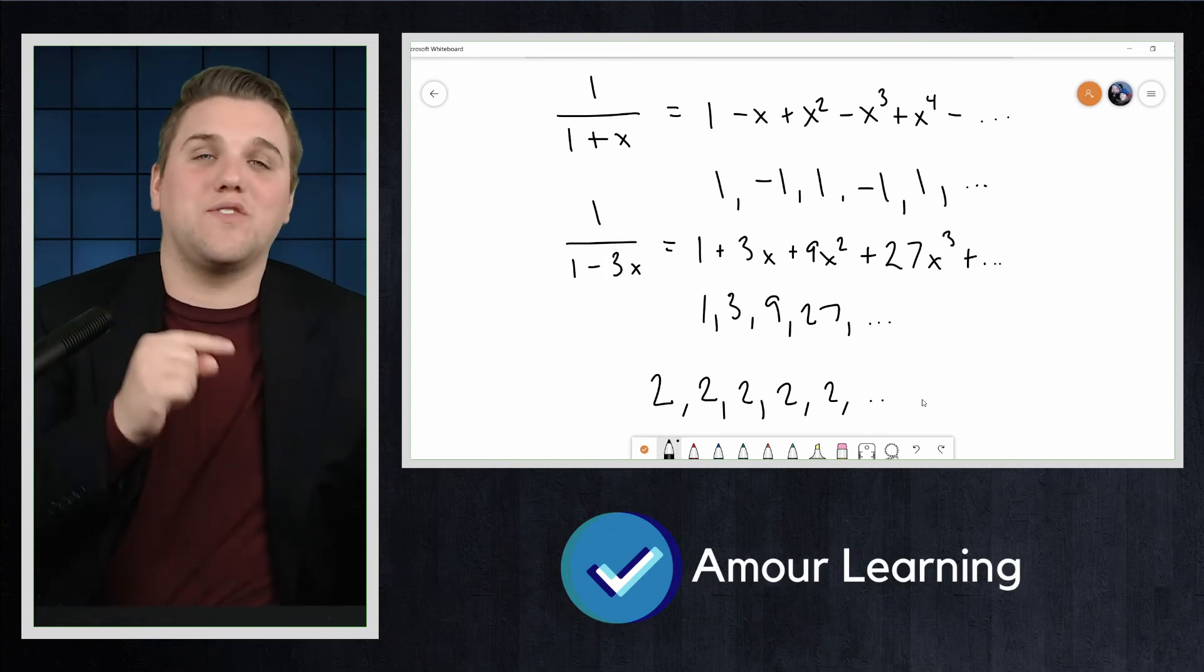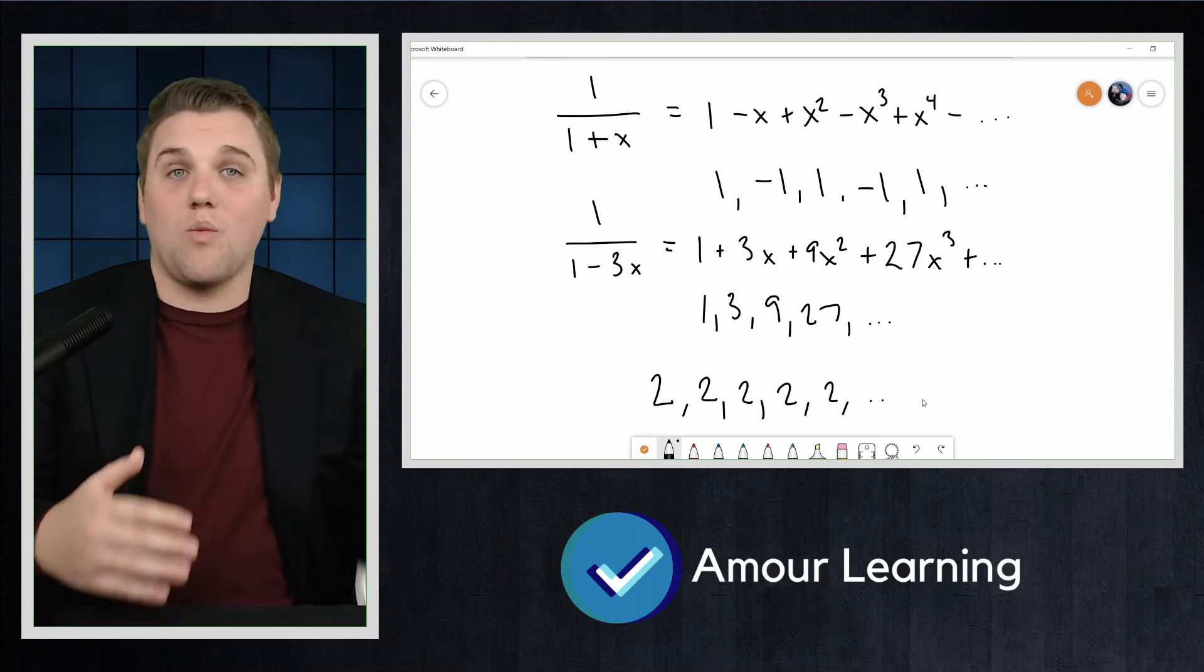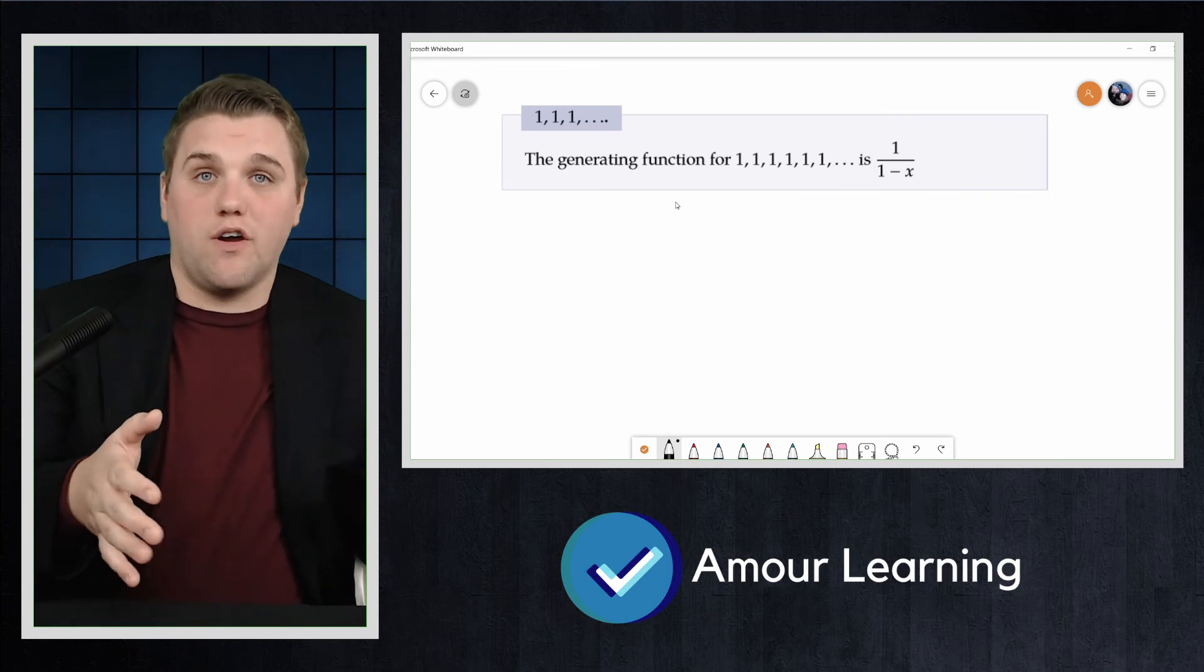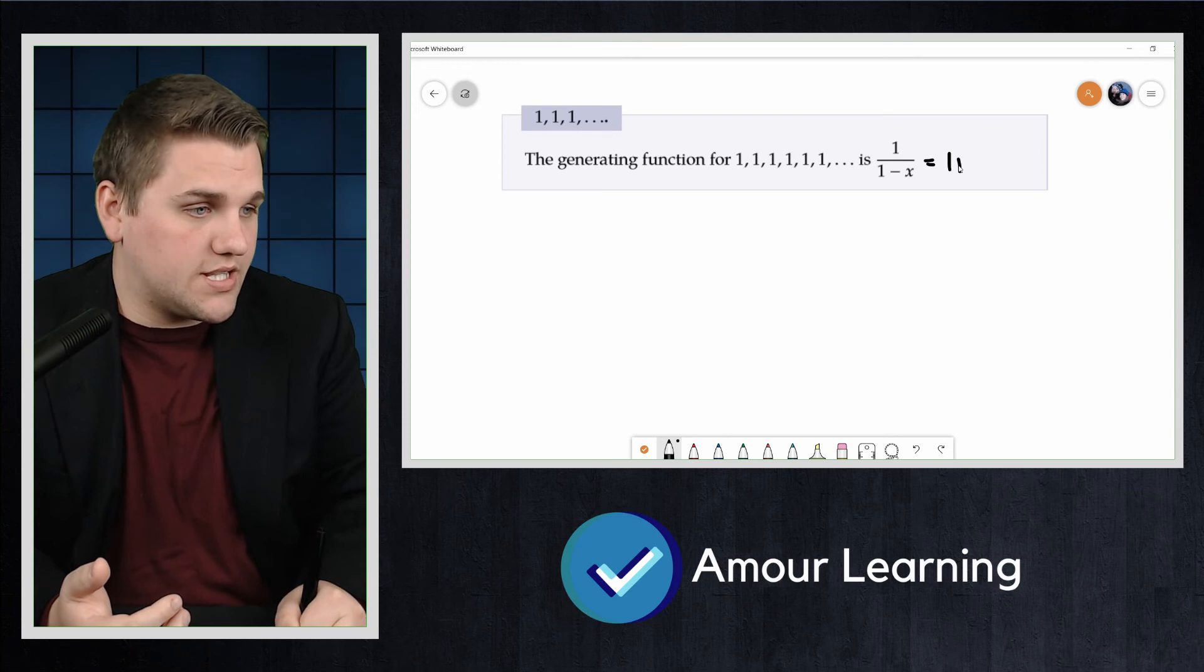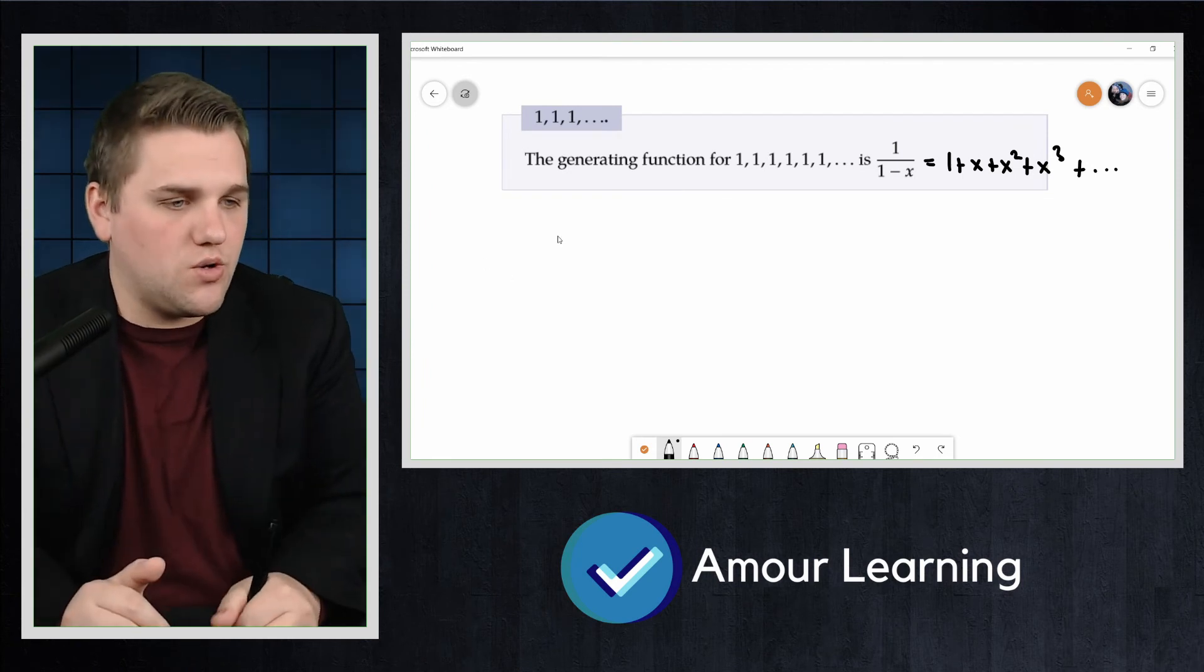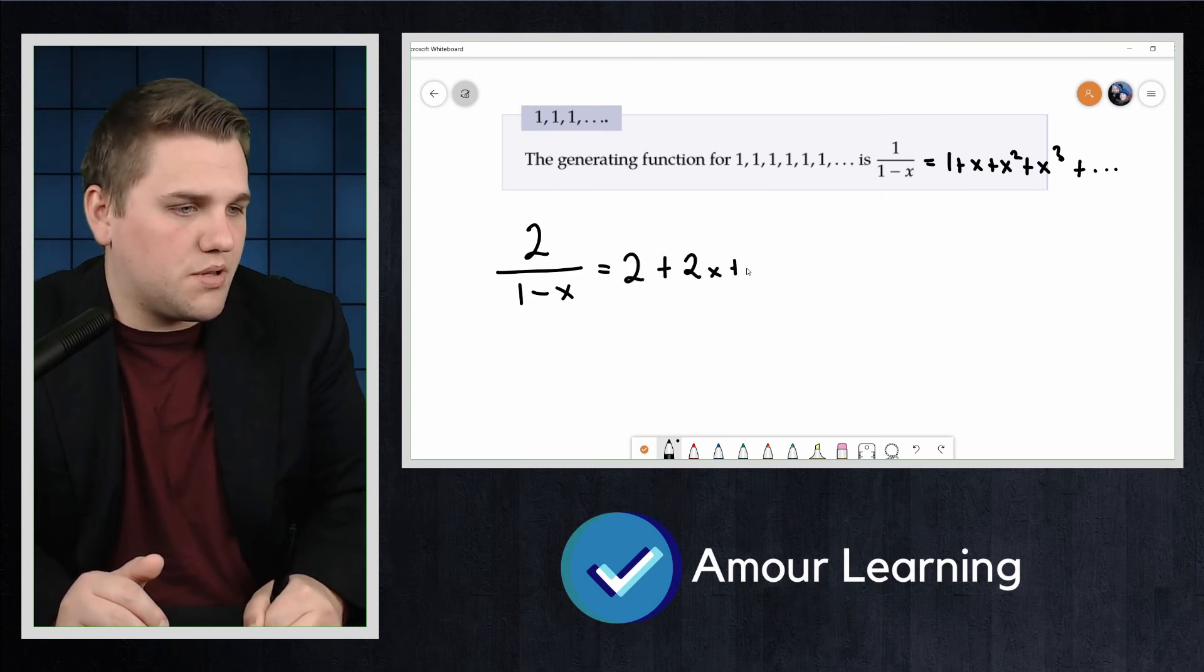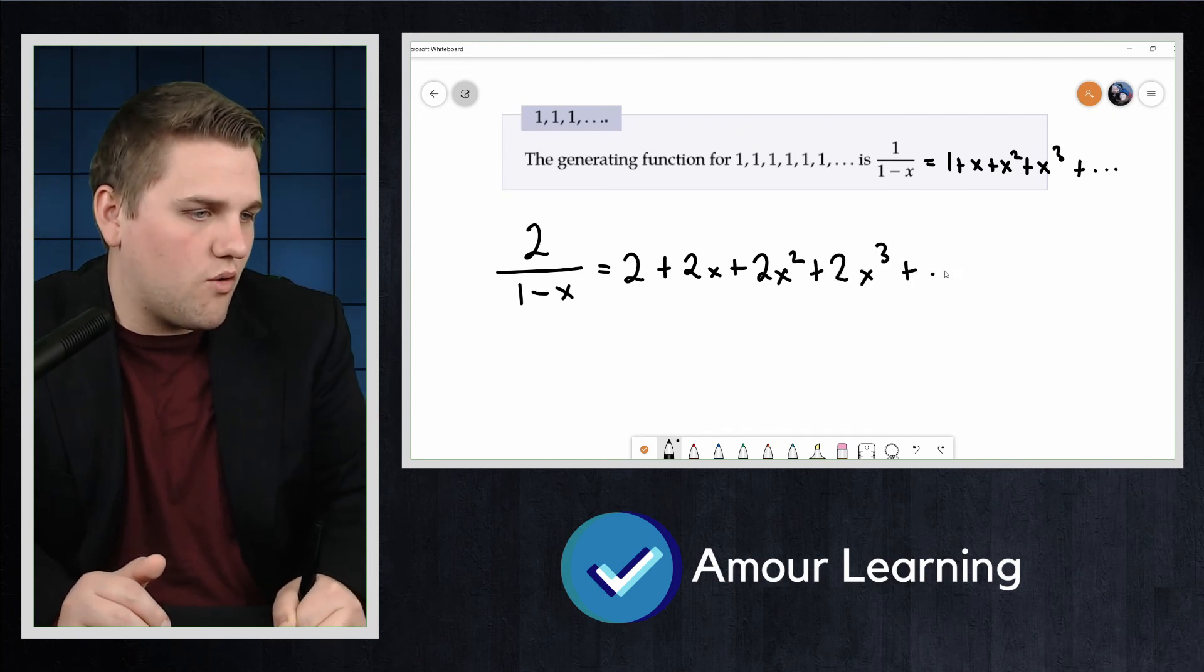Notice that each term of 2, 2, 2, 2, 2 is the result of multiplying the terms 1, 1, 1, 1, 1 by the constant 2. So multiply the generating function by 2 as well. If you remember, this generating function was 1 + x + x^2 + x^3 and so forth. We can multiply all the terms by 2 to show that 2/(1-x) = 2 + 2x + 2x^2 + 2x^3 and so forth.